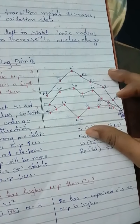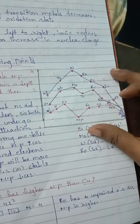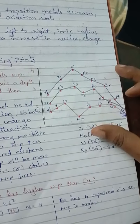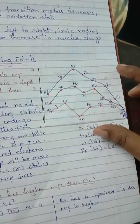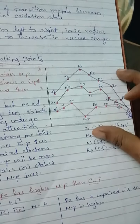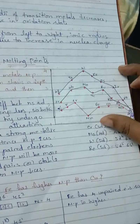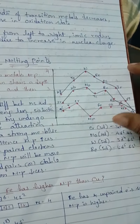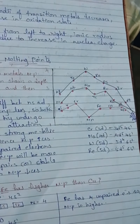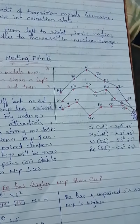The transition metals are very hard and have low volatility; their melting and boiling points are high. We are going to learn how this happens in the series using a question-wise approach.